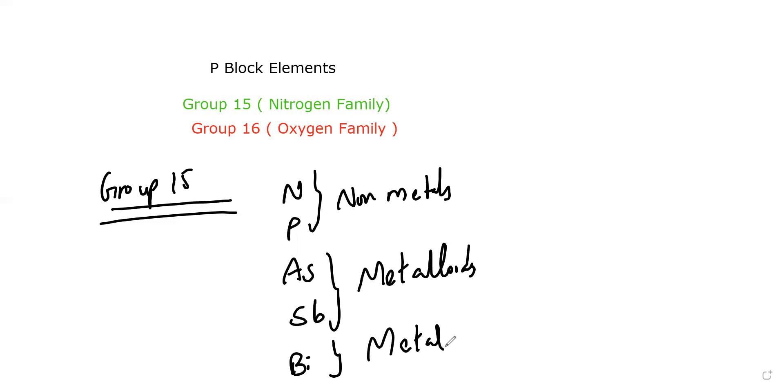I'm giving you a whole picture of Group 15 and Group 16 so it will be very easy to remember and study. Let us take the anomalous properties of nitrogen first. This can be asked in one mark, two mark questions, or MCQs, so we have to be very thorough. What is the first property?